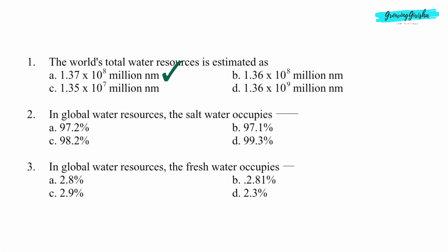Question 2. In global water resources, the salt water occupies dash. Option A: 97.2%.